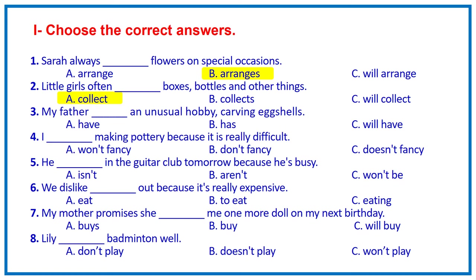Sentence 3 is also a Present Simple form; the answer is B — my father has an unusual hobby: carving. Sentence 4 is a negative form of the Present Simple tense; the answer is B — I don't fancy making pottery because it is really difficult. Sentence 5: pay attention to the word 'tomorrow' — it is the signal word of the Future Simple tense; the answer is C — he won't be in the debate club tomorrow because he's busy.